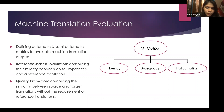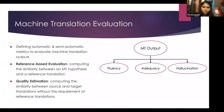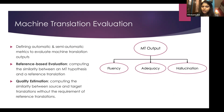Reference-based evaluation has a dependency on human-generated translations. A better approach, seen over the last three to four years, is quality estimation, which overcomes that bottleneck by directly comparing the source and the MT output without needing human-generated translations.